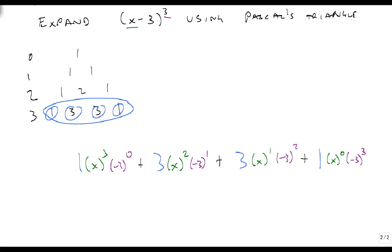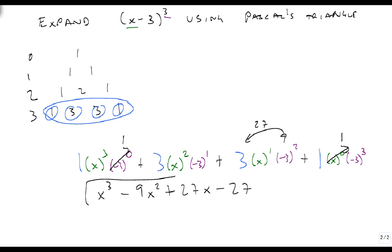So now all I have left to do is to evaluate. Well, minus 3 to the zero is 1, so this just becomes x cubed. Plus minus 3 to the 1, that's actually going to become minus 9x squared, plus 27x, because the minus 3 becomes a 9 and 9 times 3 is 27. And then this just becomes a minus 27, and x to the zero becomes 1 and goes away. So my answer is right here. x minus 3 cubed becomes x cubed minus 9x squared plus 27x minus 27.